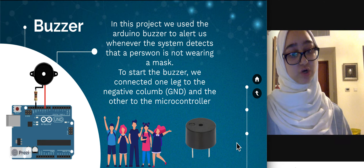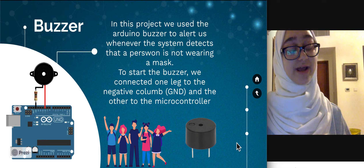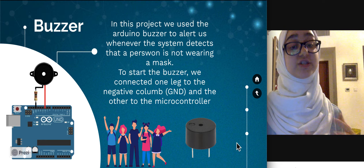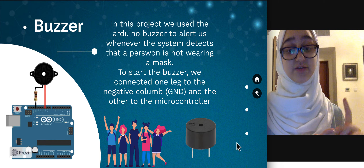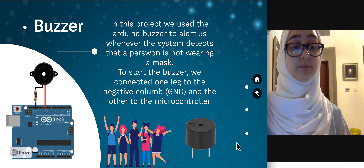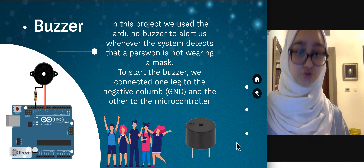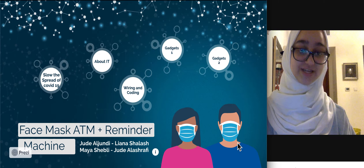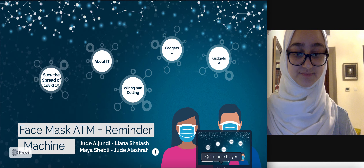In this project we used the Arduino buzzer to alert us whenever the motion sensor detects that someone is not wearing a mask. To start the buzzer, we connected one leg to the negative column or the GND and the other to the microcontroller. This is the end of my part — thank you for listening. I'll see you next time.